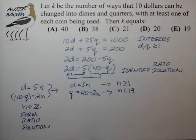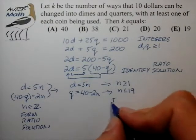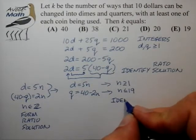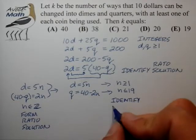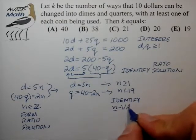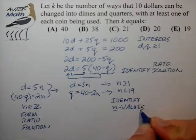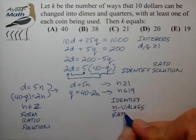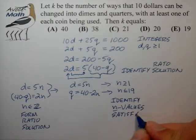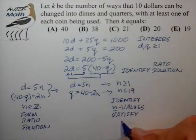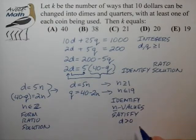I typically describe this step as identify the n values to satisfy the constraints on d and q. In this case d has to be greater than 0, q has to be greater than 0.